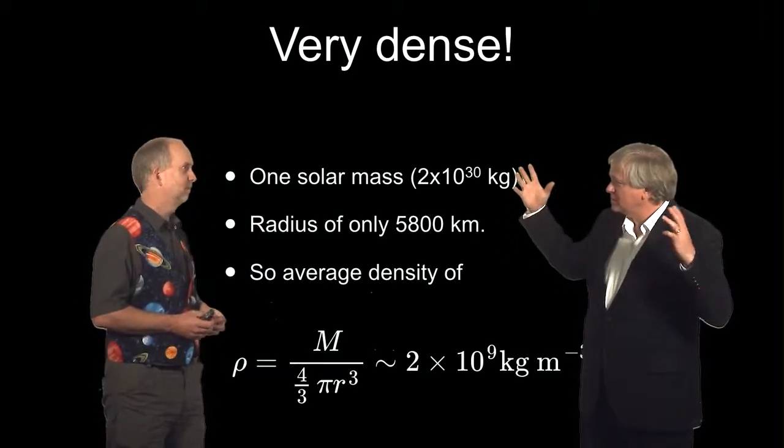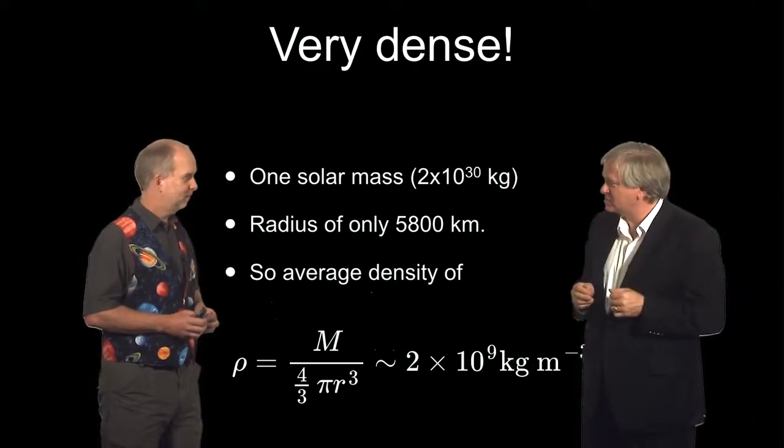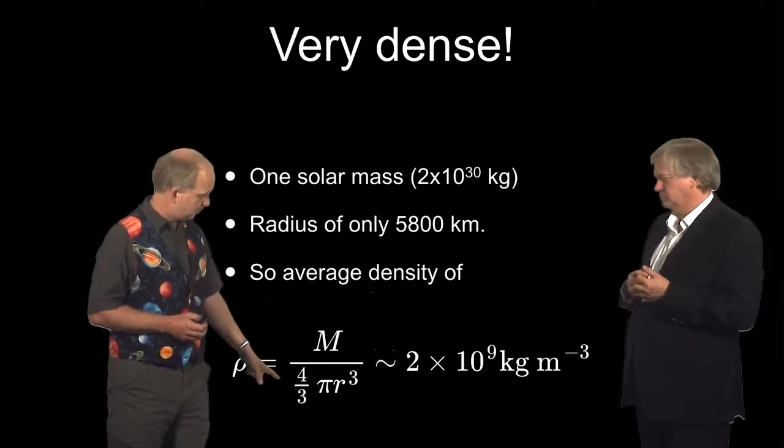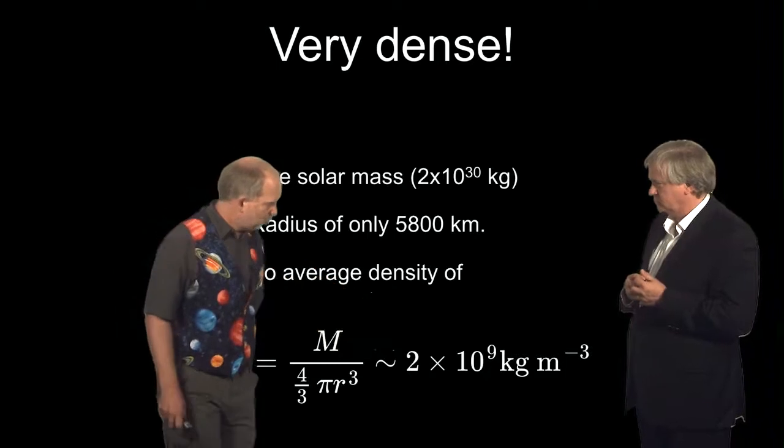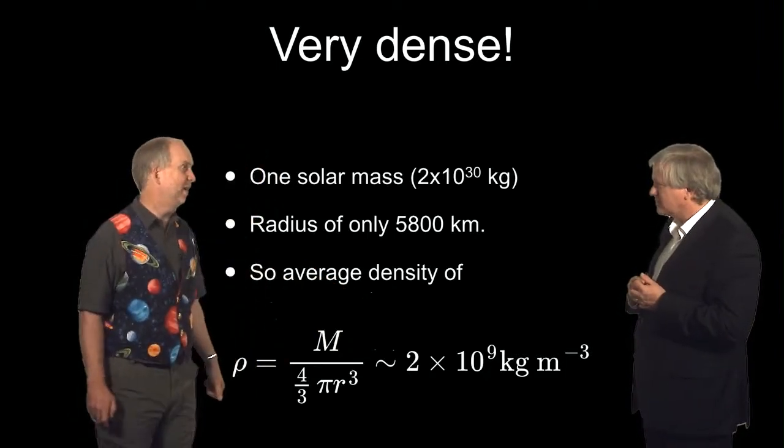So you've got something the mass of the sun crammed down in something the size of the Earth. You can work out the density, just divide the mass by the volume, volume of the sphere 4 thirds pi r cubed, and you come out with 2 by 10 to the 9 kilograms per cubic meter, 2 billion kilograms per cubic meter.